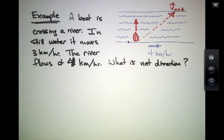But as it's crossing a moving river, the river is flowing downstream at a speed of 4 kilometers per hour. And if the boat were to try to head straight across the river, it wouldn't succeed because the river would be pushing it downstream. What's the net direction for this boat? And what's its net speed?